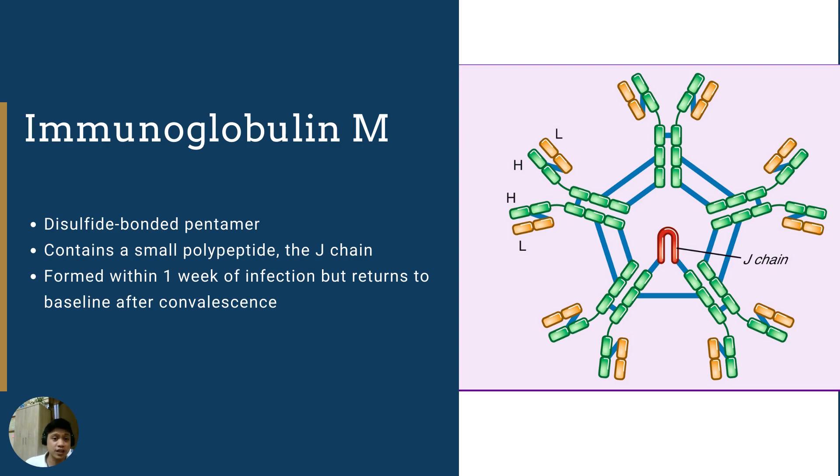The next class is immunoglobulin M. And this is a disulfide-bonded pentamer. You will see the disulfide bridge in this image as the blue link between the monomers or fragments. It contains a small polypeptide, which is the J-chain. And it is formed within one week of infection, but returns to baseline after convalescence. What this means is that immunoglobulin M is the first class of antibody synthesized during the first encounter with a pathogen. So once you are infected, the first class of antibodies produced would be immunoglobulin M.